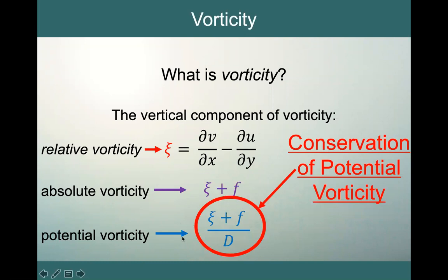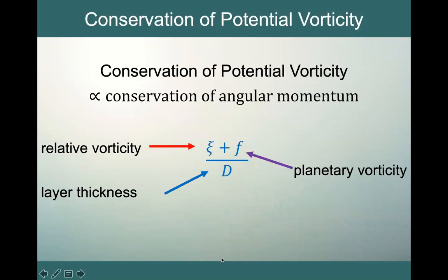So this is what we're trying to conserve: conservation of potential vorticity, which includes all three components — our relative vorticity, our planetary vorticity, and our layer thickness depth. Conservation of potential vorticity is very similar to what you've learned about in your physics classes: conservation of angular momentum. I've put a couple of videos of conservation of angular momentum on Canvas — go check those out, and that'll help you understand what we're talking about here.